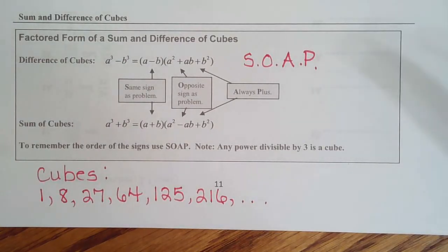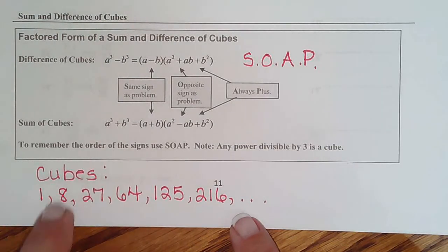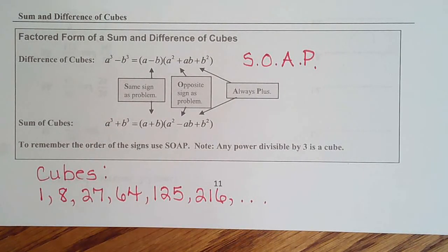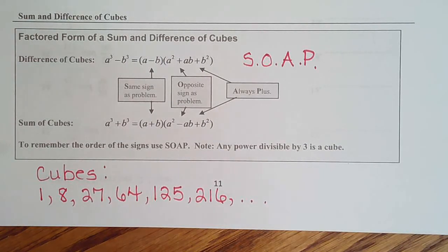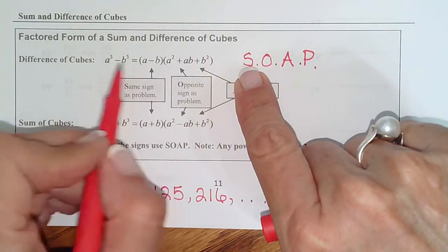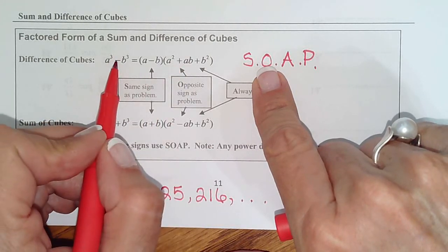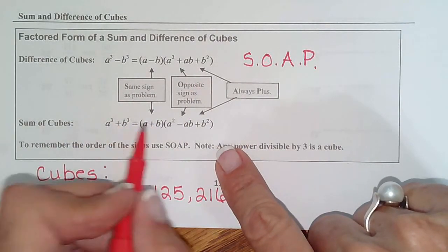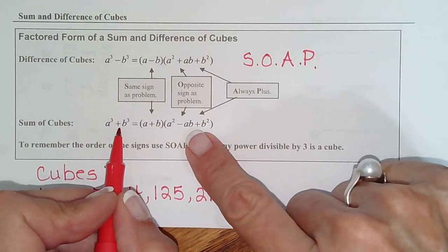Once in a while you'll see 7, which is 343. But if you know those 6, you're good. So those are the coefficients that we could have in front of the variables. The variables themselves have to have exponents that are divisible by 3. That means 3, 6, 9. So that's what the exponents will be. So SOAP tells us how to do our sign. S stands for same sign as the problem. O stands for opposite sign of the original problem. And AP means the last sign will always be positive. Same thing with the plus. Same as the original. Opposite of the original. Always positive.